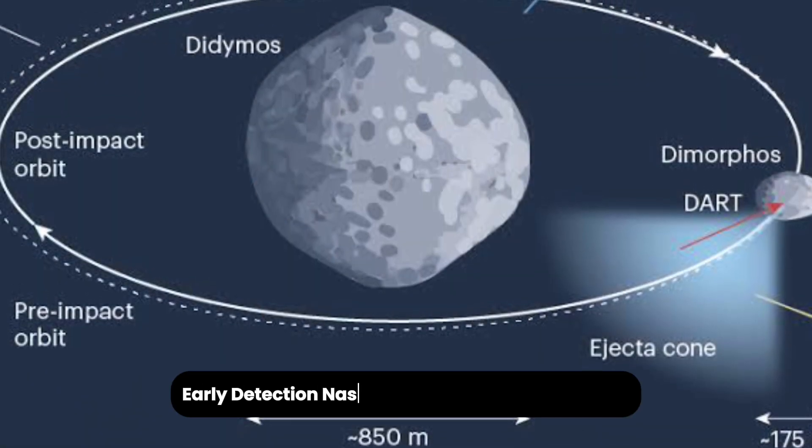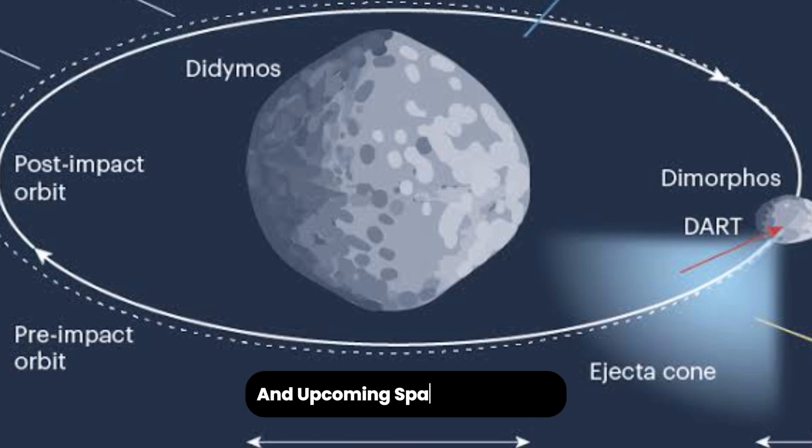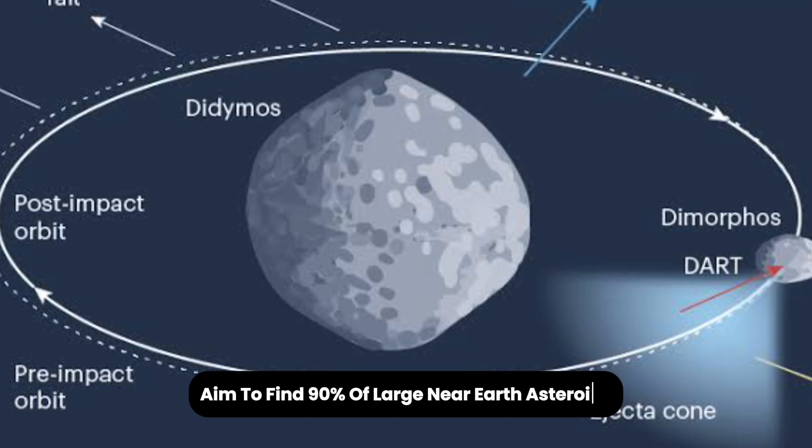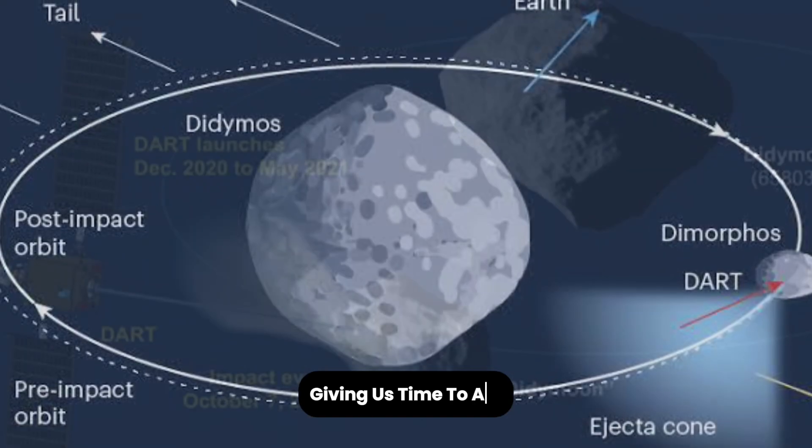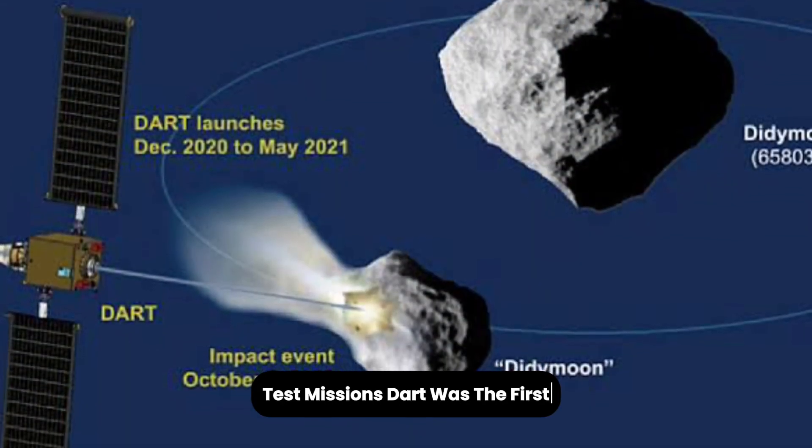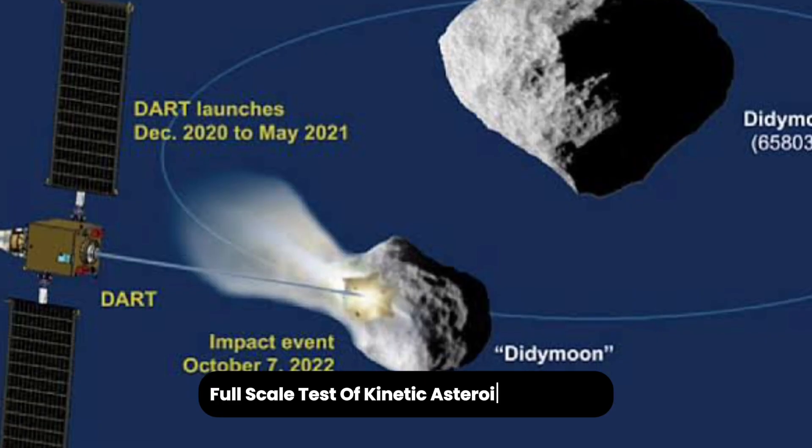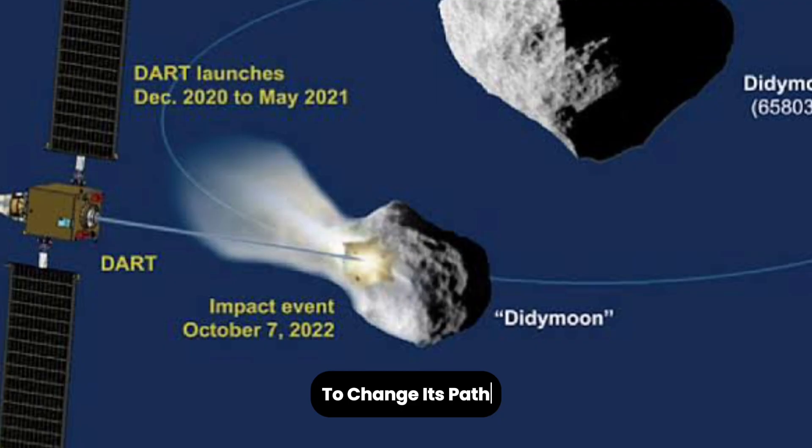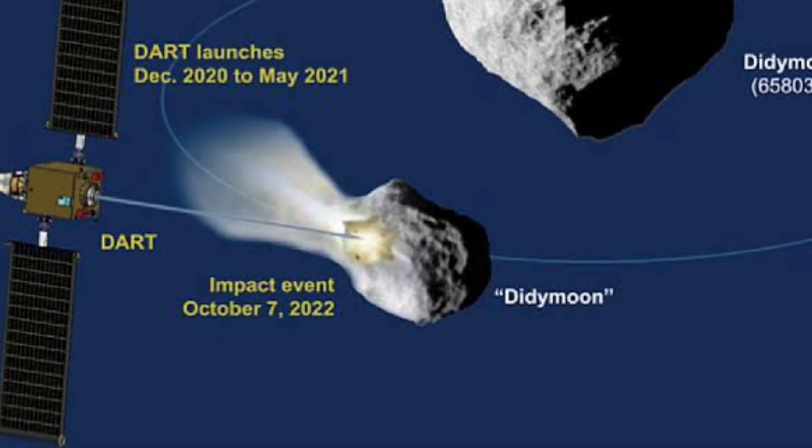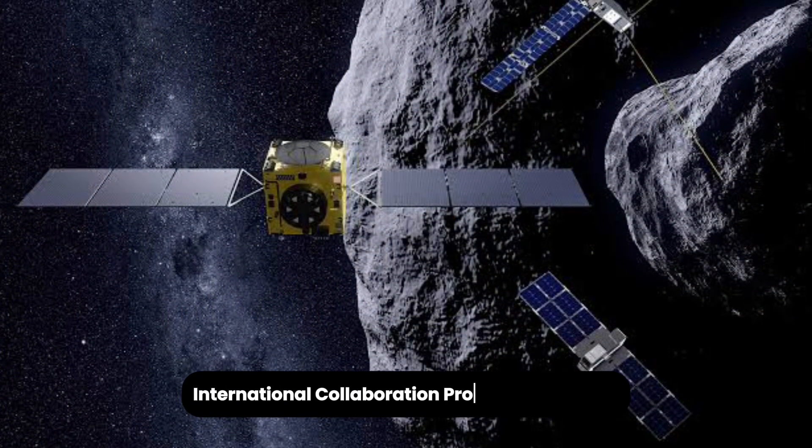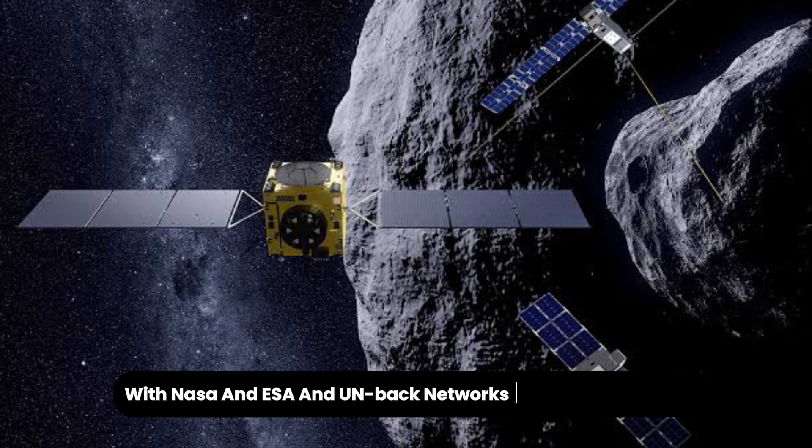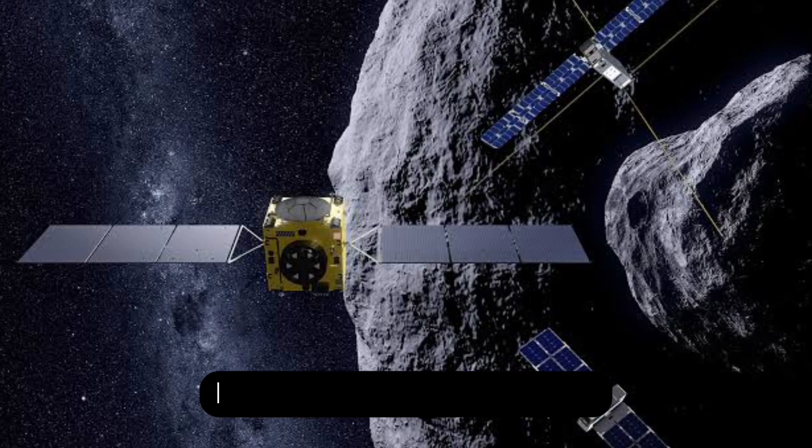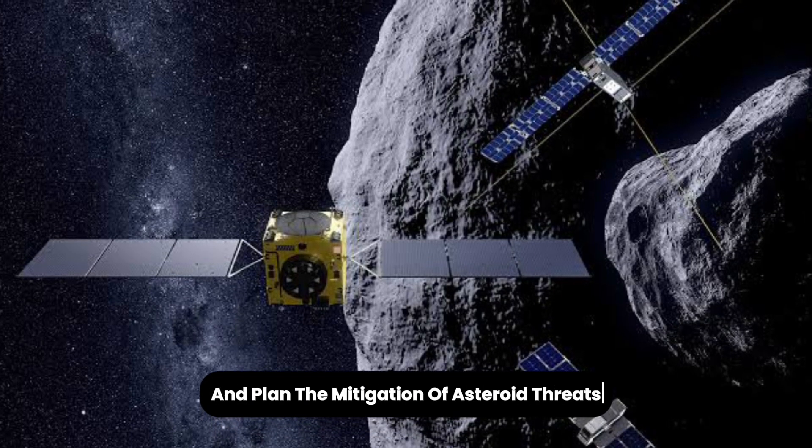Early detection, NASA's NEO Observations Program and upcoming space telescopes, e.g. NEO Surveyor, aim to find 90% of large near-Earth asteroids, giving us time to act. Test missions, DART was the first full-scale test of kinetic asteroid deflection. It proved that a spacecraft can be guided into an asteroid to change its path. ESA's HERA will soon check the results up close. International collaboration, programs like AIDA with NASA and ESA, and UN-backed networks IAWN-SMPAG, unify global efforts to track and plan the mitigation of asteroid threats.